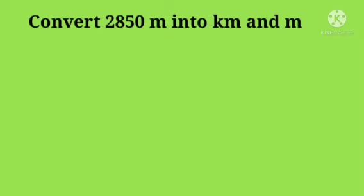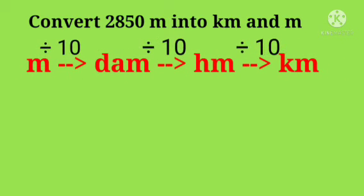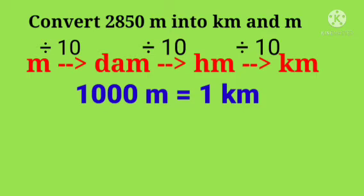First, convert 2850 meter into kilometer and meter. According to the chart, meter (m), then deca meter (dam), then hectometer (hm), and last kilometer (km), all divided by 10.